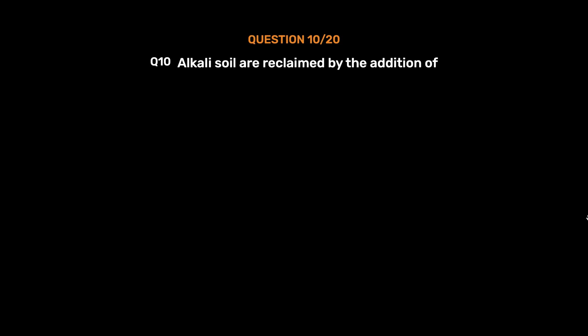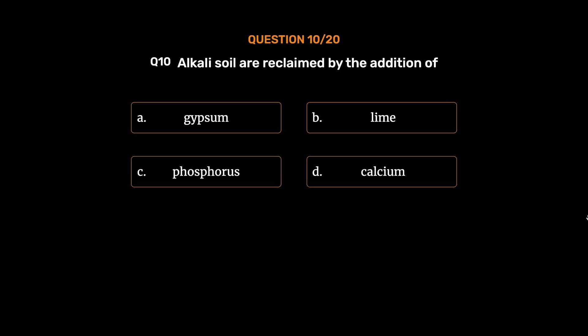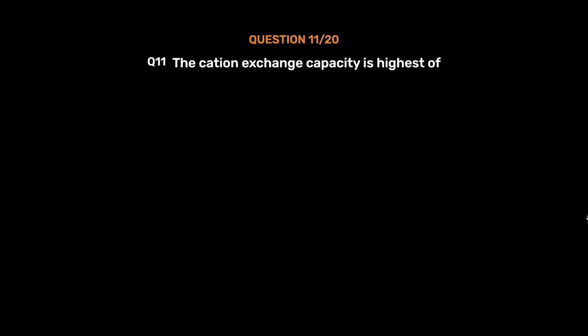Question number 10. Alkali soils are reclaimed by the addition of: option A, Gypsum; option B, Lime; option C, Phosphorus; option D, Calcium. The correct answer is option A, Gypsum.